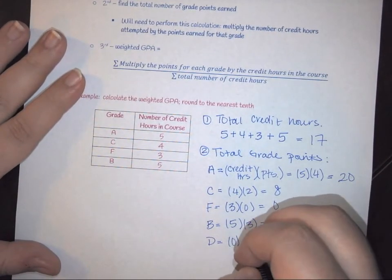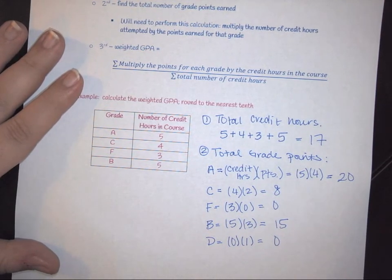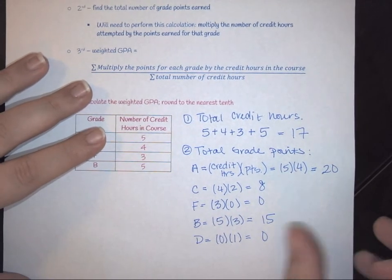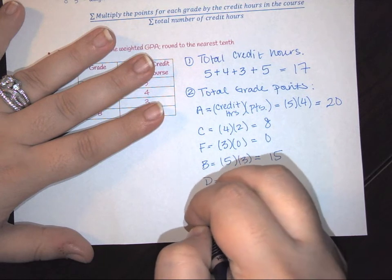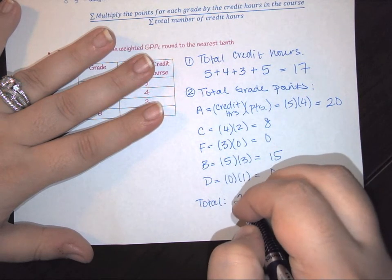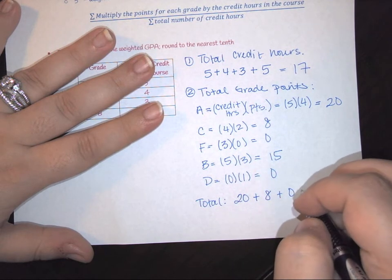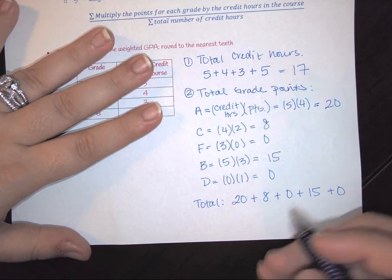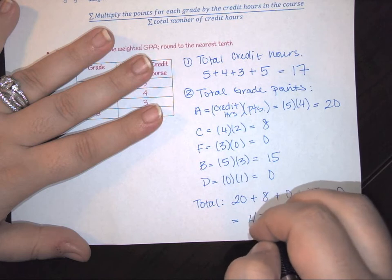Now to find the total, we have to sum it all together. So here to find the total, I have to do my 20 + 8 + 0 + 15 + 0, and so this here is going to give you 43 points.